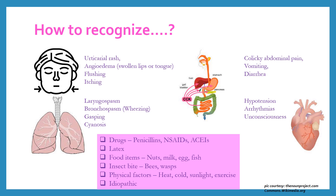Certain conditions which may cause anaphylaxis include drugs like penicillins, NSAIDs, ACE inhibitors, vaccines, and intravenous immunoglobulin; latex present in surgical gloves; food items like nuts especially peanuts, milk, egg, fish; insect bites by bees and wasps; physical factors like heat, cold, sunlight etc.; and idiopathic causes. So practically anything can cause anaphylaxis in children.